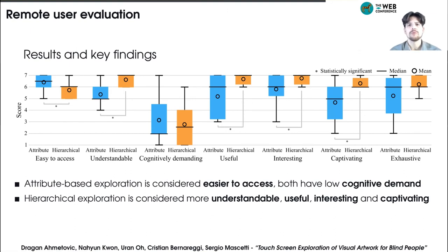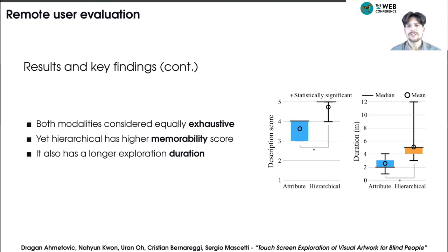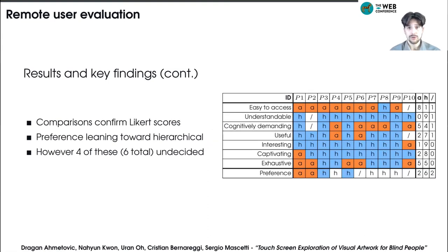We analyzed the subjective metric scores between the two modalities, and we discovered that attribute-based exploration is considered easier to access. Instead, hierarchical exploration is considered to be more understandable, useful, interesting, and captivating. Both modalities registered low cognitive demand scores, and they also did not differ significantly in the perceived exhaustiveness. Yet, considering the memorability score, hierarchical exploration was significantly better. Participants also explored the artwork for longer time with the hierarchical modality. The overall better scores indicate that the design of the hierarchical modality, which was proposed together with domain experts, is more effective than the approach based on prior literature that was designed for generic alternative text image presentation. Direct comparisons between the two modalities along the identified metrics confirmed the subjective scores, and the overall preference leans toward hierarchical exploration.